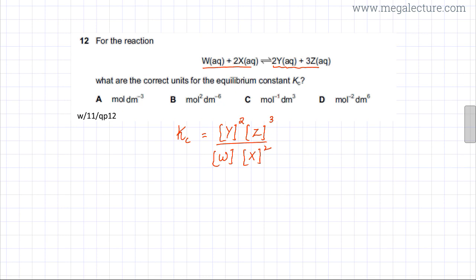It would be (mol dm⁻³)² multiplied by (mol dm⁻³)³, divided by (mol dm⁻³) multiplied by (mol dm⁻³)².